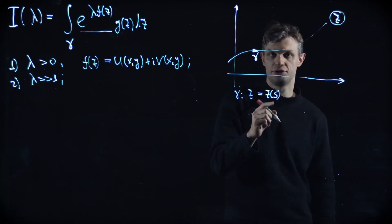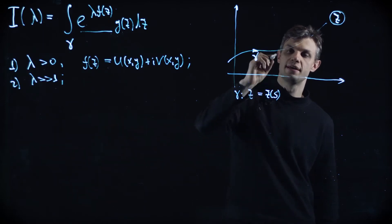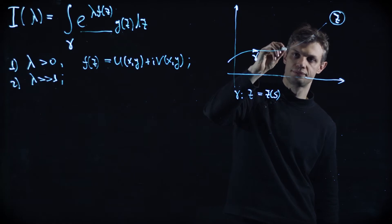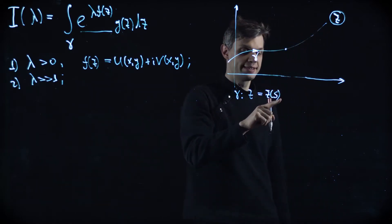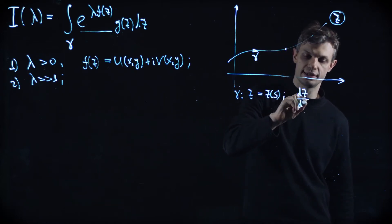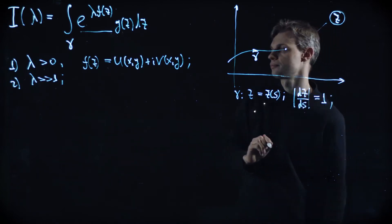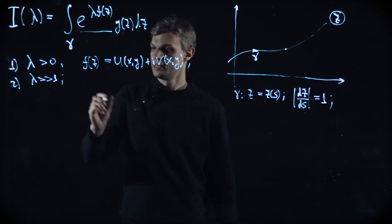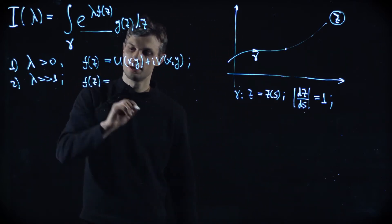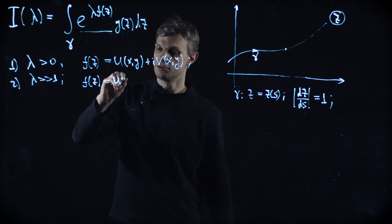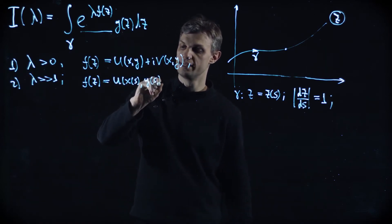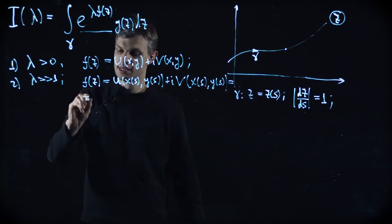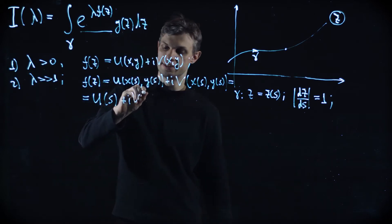The choice of s can be quite arbitrary, but it's very suitable to choose it such that it represents the length of the curve of the contour measured from some reference point, which we'll choose later. Since s is the length, then |dz/ds| = 1. Since we take the integral along the contour parameterized by s, our function f(z) becomes effectively a function of the parameter s: u(x(s), y(s)) + i·v(x(s), y(s)), so effectively just u(s) and v(s).